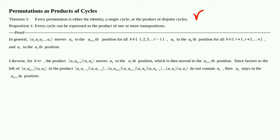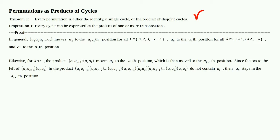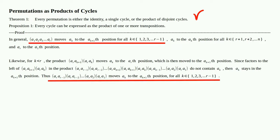Since factors to the left of (aᵣ aₖ₊₁)(aᵣ aₖ) in that product do not contain aₖ — you can verify none of them have aₖ in them — then aₖ stays in the aₖ₊₁ position. Thus that product of transpositions moves aₖ to the aₖ₊₁ position for all k in {1, ..., r−1}, which is exactly what the original cycle does.